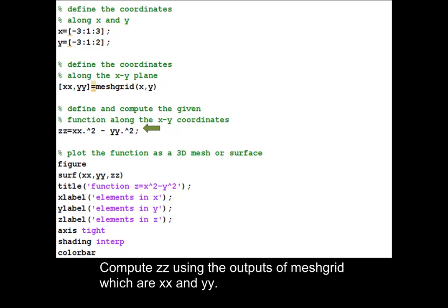Compute zz using the outputs of meshgrid, which are xx and yy.